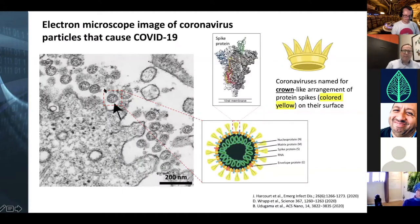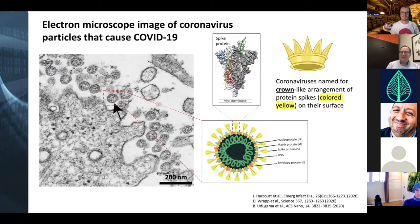What kind of data can you get from an electron microscope? This is an image from an electron microscope showing coronavirus particles. We're all living through this right now. From the scale bar at the bottom — 200 nanometers — you can get a sense of just how incredibly small these particles are.